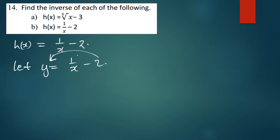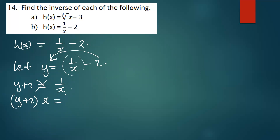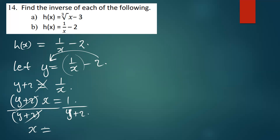I'm going to take this two to the other side of the equal sign, because my aim is to make x the subject of the formula. So I'm going to have y plus two equal to one over x. From there I need to make x the subject, so I cross-multiply. Cross-multiplying gives y plus two times x equals one. To isolate x, I divide both sides by y plus two.